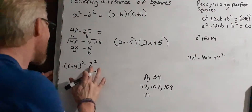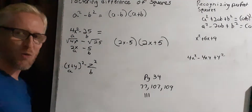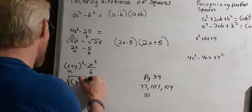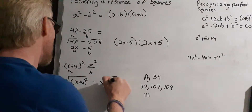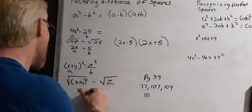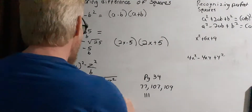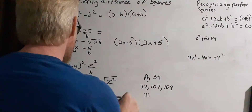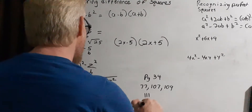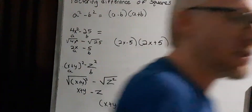Now let's look at the second example. We have a binomial and a monomial. Note this is actually a z — it looks like a 2 but it's a z. This binomial is our a and the monomial is our b. We determine the square root: the square root of (x plus y) squared is x plus y, and the square root of z squared is z.